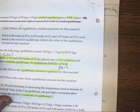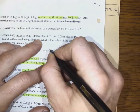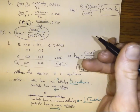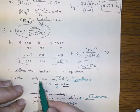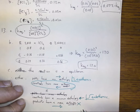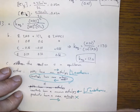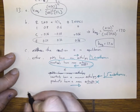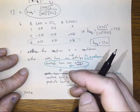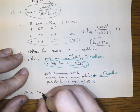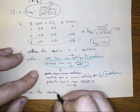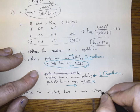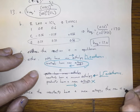If we look, where's the maximum entropy? The maximum entropy is on the reactant side — the reactants have maximum entropy. So as a result, since the reactants have maximum entropy, the reaction is exothermic.